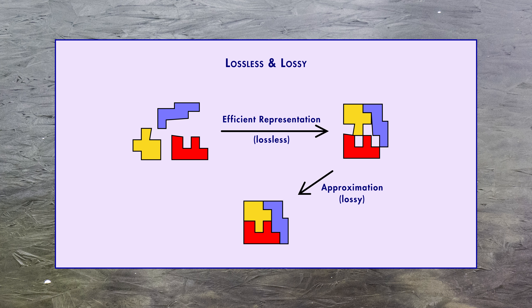For media designed for human consumption, like pictures and videos, we can combine efficient representation with some approximation and simplification to get much smaller file sizes. This is called lossy compression, because it entails some loss of quality. But the good news is that the trade-off between file size and quality is under the control of the creator. So to store a video, we could just compress each frame as a JPEG image — that's a lossy format — and then cram all of those images into a file. You can do exactly that, because that's what the Motion JPEG format actually is.